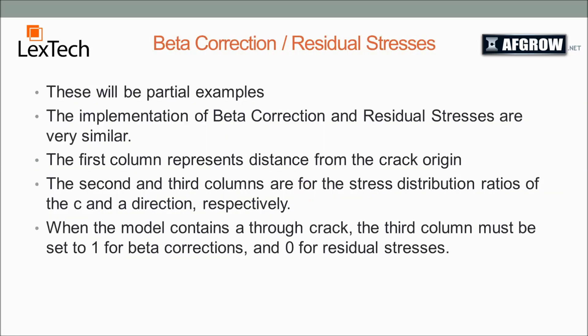Now I'll cover beta correction and residual stresses. These will be partial examples that can be fit into your other projects. The implementation of beta correction and residual stresses are very similar. The first column represents the distance from the crack origin. The second and third columns are for the stress distribution ratios of the C and A direction respectively. When the model contains a through crack, the third column must always be set to 1 for beta corrections and 0 for residual stresses.